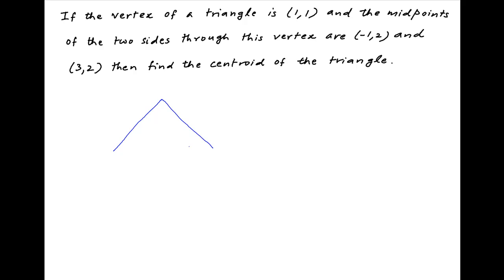Let the vertices of this triangle be A, B, C. Let the coordinates of vertex A be (1, 1) as given in the problem statement. Let's assume that the midpoint of side AB is D, with coordinates (-1, 2), and the midpoint of side AC is E with coordinates (3, 2). Let the coordinates of vertex B be (a, b) and the coordinates of vertex C be (c, d).